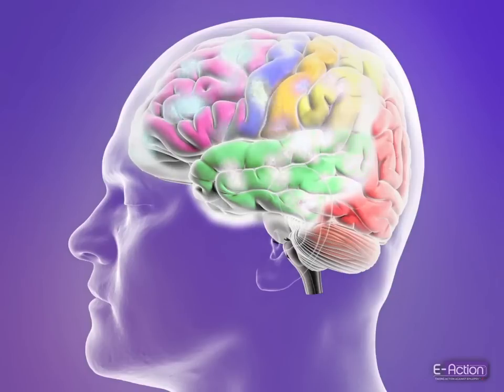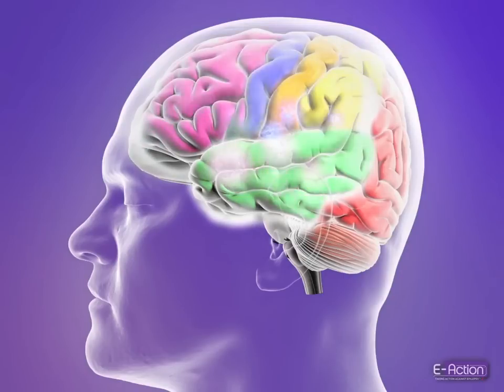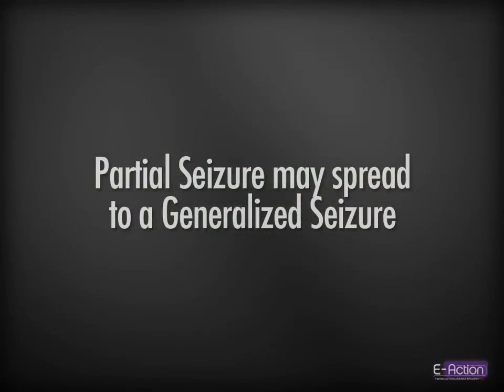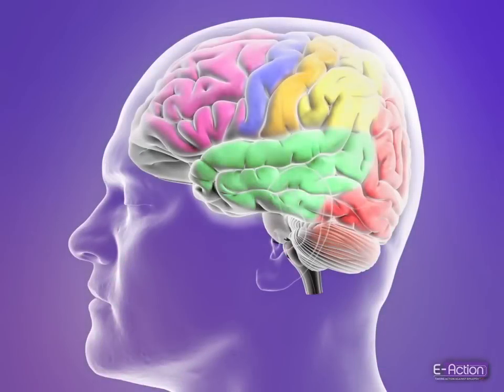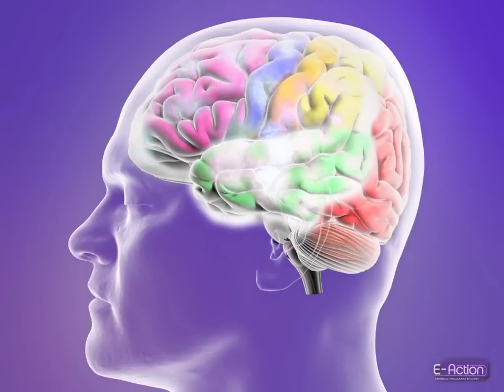They are often identified by the manifestation of complicated motor and sensory actions. There may be some change in consciousness or memory. A partial seizure, seen here in the temporal lobe, may spread, becoming a generalized seizure involving neurons of the entire brain.